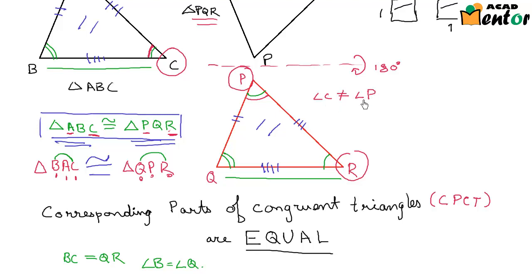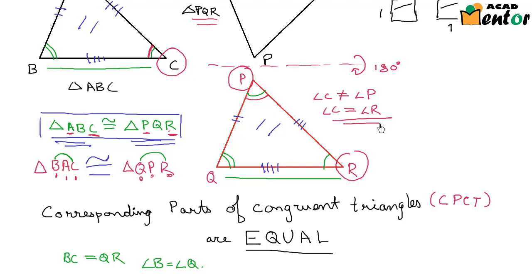It could be if there was some other relationship, but angle C would most definitely be equal to angle R. This is absolutely true because they are CPCTs.